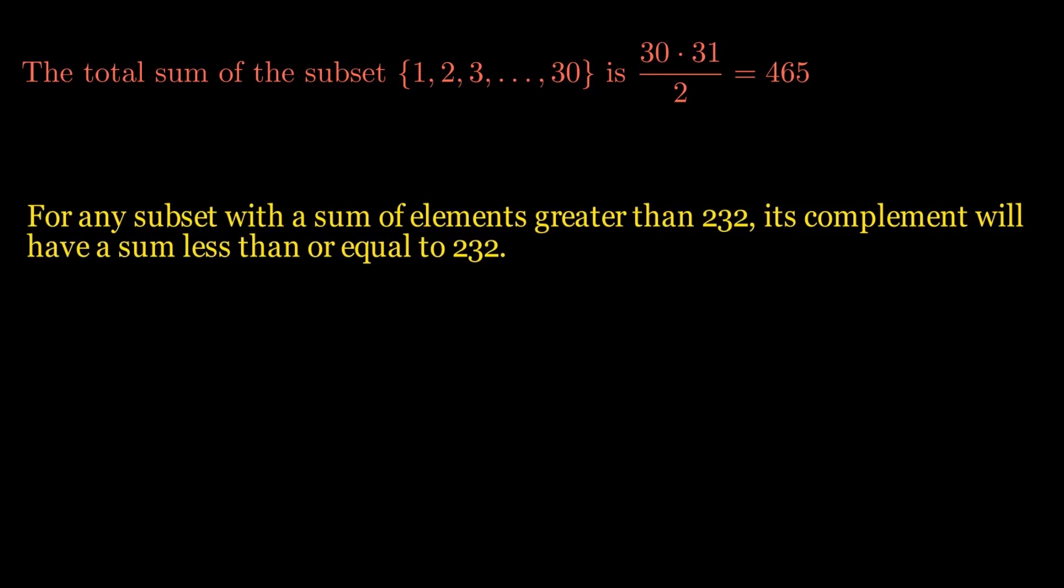In other words, there is a one-to-one correspondence between the subsets with a sum greater than 232 and those with a sum less than or equal to 232, so they must be equal in number.